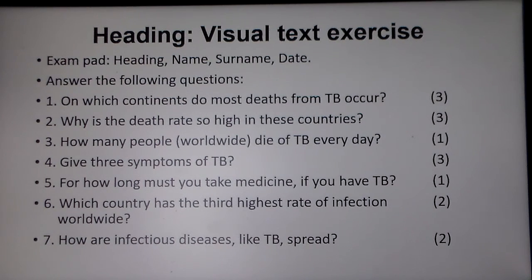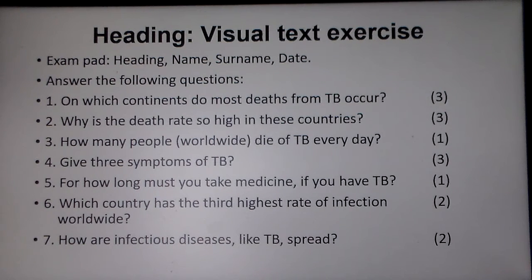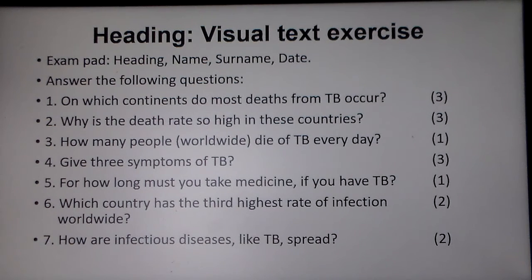On an exam pad, first line your heading is 'Visual Text Exercise,' then your name, your surname, the date on which you do it, and then you answer questions one to seven. Just look at the visual text and the answers are there — you don't even have to go look for them really. We'll obviously do some more of these exercises going forward when we're back in class as well, because this will definitely be included in your future exam papers.